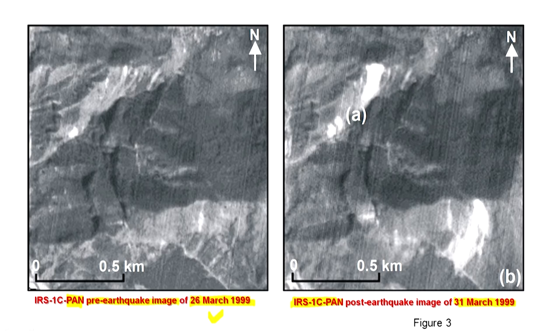When doing this kind of interpretation, one or two things must be verified before attributing these landslides as induced by that earthquake event. Other possible reasons include intense rainfall or human interventions like road construction. We checked the meteorological data and local inputs and confirmed there was no rain during those days, and there was no road construction during the time when these images were acquired.